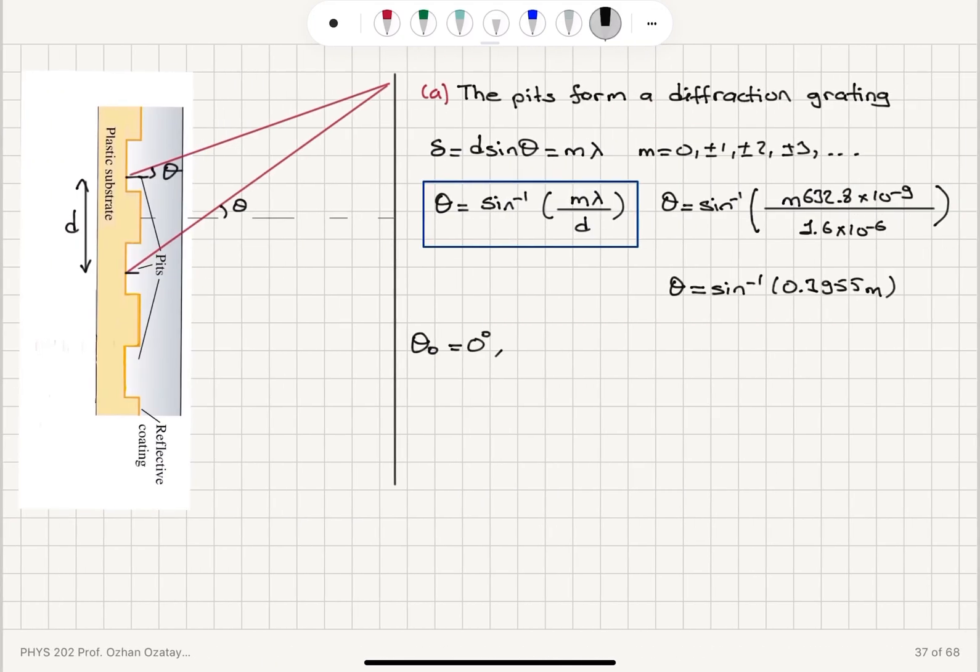Then we have theta 1, where M is equal to 1. This gives us sin inverse of 0.3955 radians, 23.3 degrees.